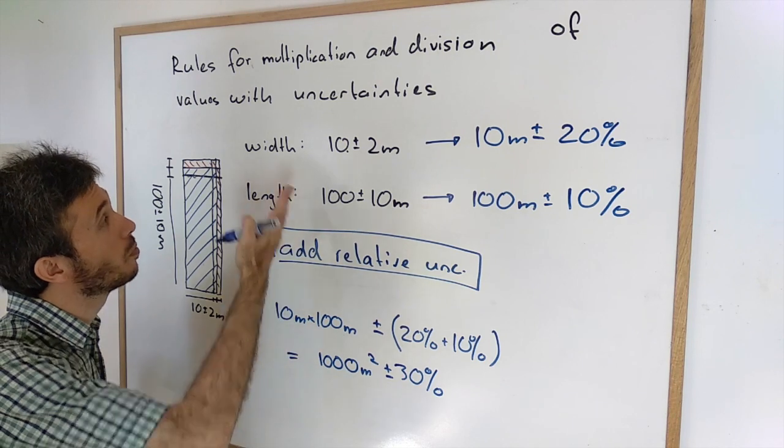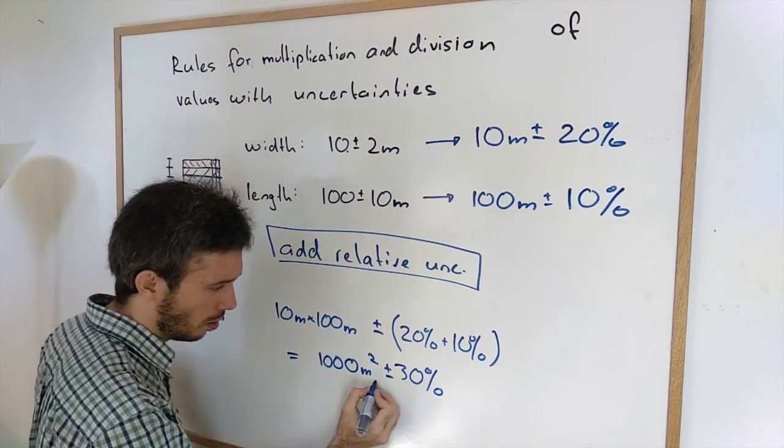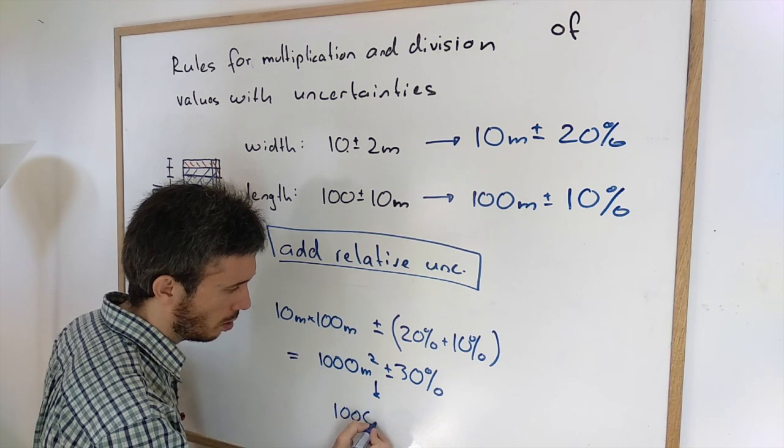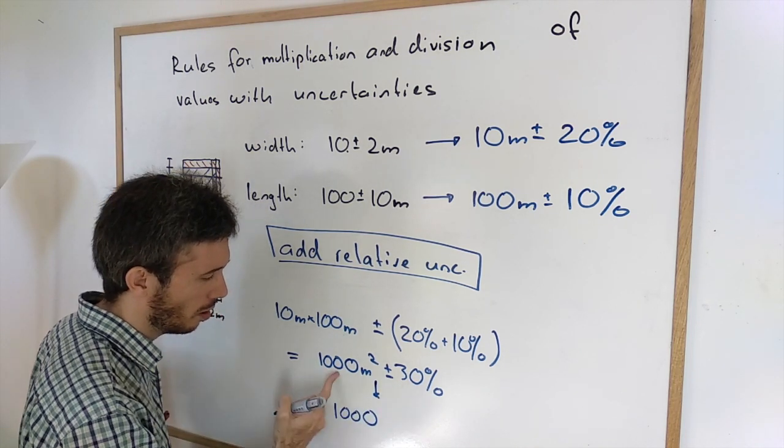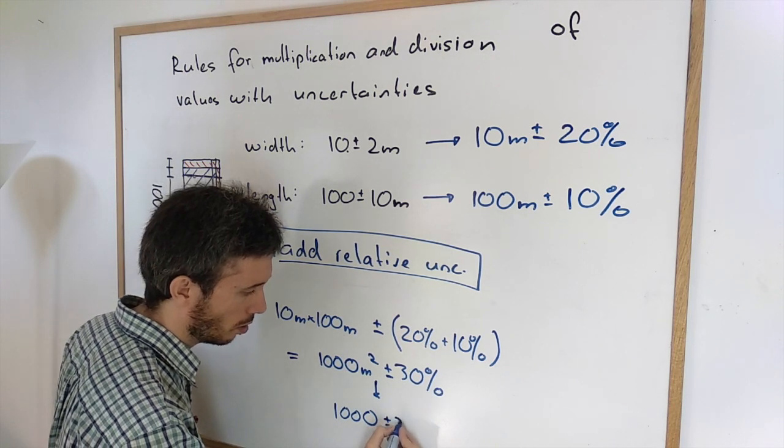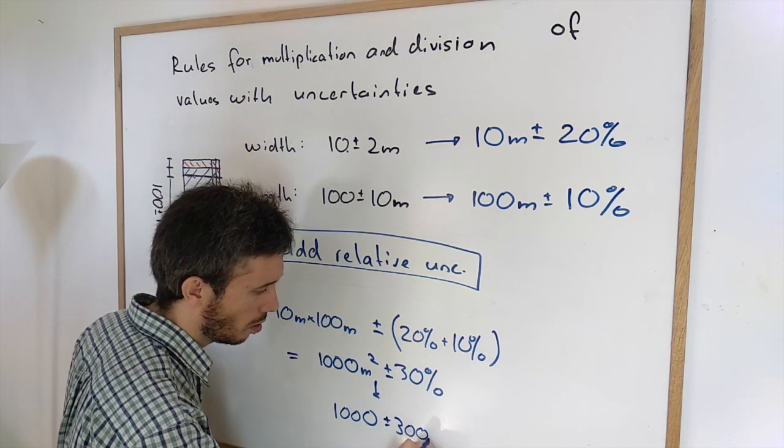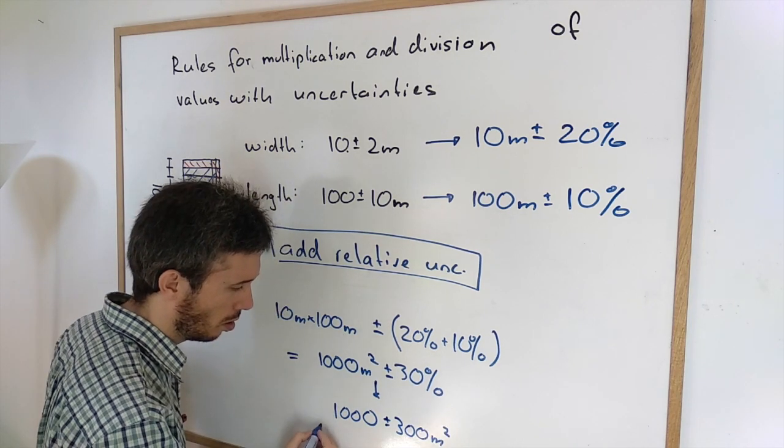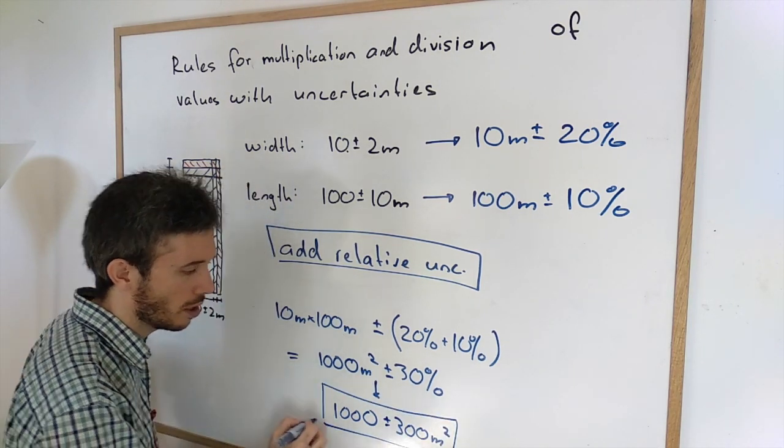Now, if I wanted to convert this back into absolute, I can. So this means 1000 square meters, 30 percent of 1000 is 300. So I could give this as the final answer.